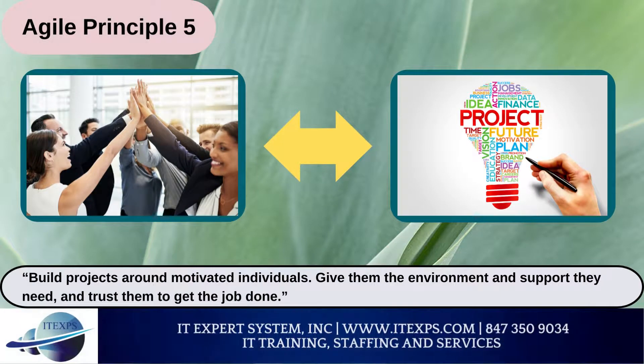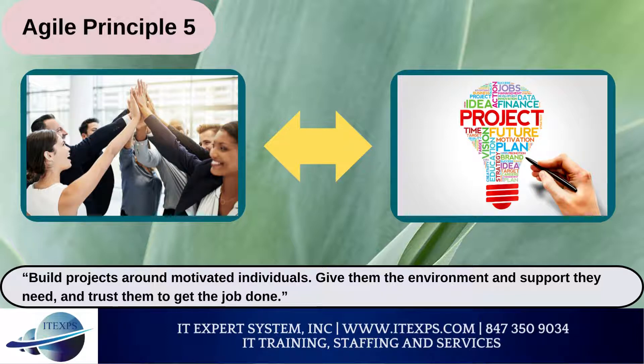Agile Principle 5: Build projects around motivated individuals. Give them the environment and support they need, and trust them to get the job done. A key part of the agile philosophy is empowering individuals and teams through trust and autonomy. The agile team needs to be carefully built to include the right people and skill sets, and responsibilities need to be clearly defined before the beginning of a project. Once the work has begun, there is no place in agile for micromanagement or hand-holding.